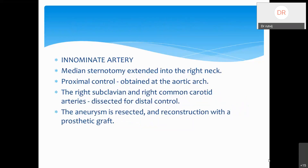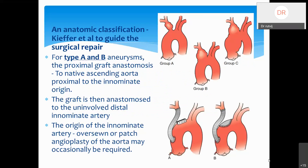For innominate artery aneurysms, the approach is a median sternotomy extending into the right neck. Proximally, control is at the arch of the aorta; distally, the right subclavian artery and common carotid arteries are dissected and controlled, and the aneurysm is resected and reconstructed with a prosthetic graft. An anatomical classification by Kaifer et al. guides the surgical repair, with three groups: A, B, and C.